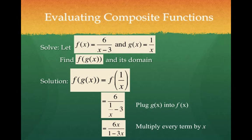So notice if I multiply every single term by x, my 1 over x just becomes a 1, and I get an x on my 6 and my 3. And so this is our composed function of sending g into f.